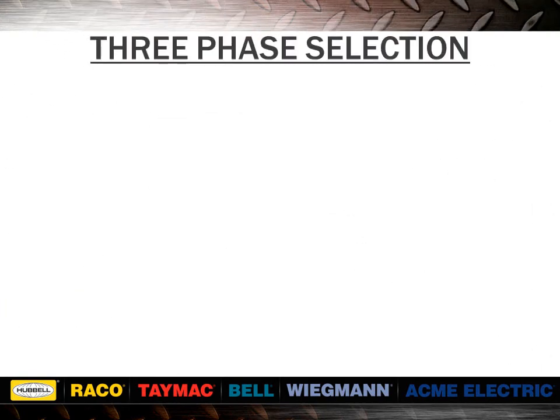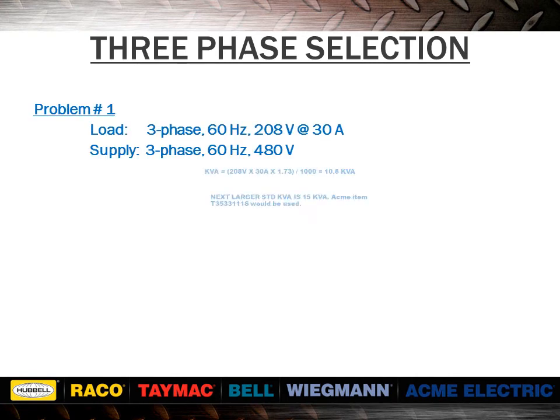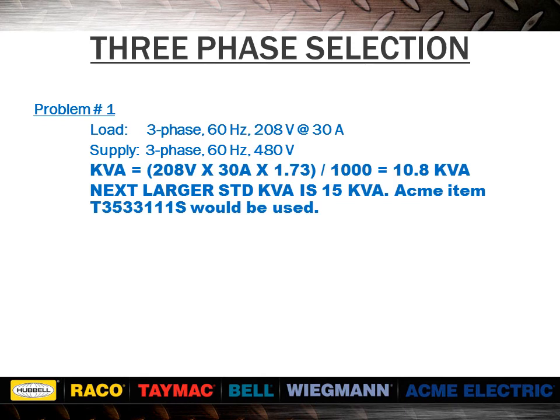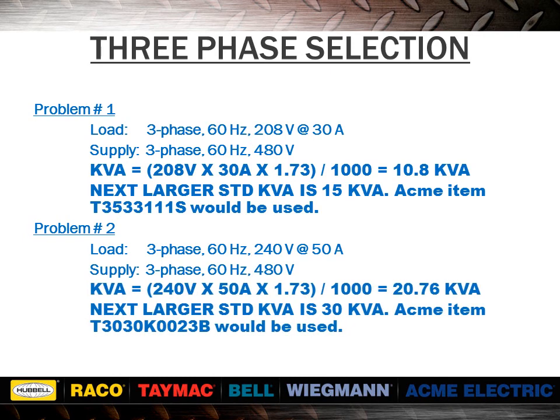Let's review two examples of three-phase selection. In problem one, the kVA requirement would be 208 volts multiplied by 30 amps multiplied by 1.73, then divided by 1,000, giving us a 10.8 kVA requirement. For this, our standard 15 kVA transformer, item number T3533111S, would be used. In problem two, the kVA requirement would be 240 volts multiplied by 50 amps multiplied by 1.73, then divided by 1,000, giving us a 20.76 kVA requirement. For this, our standard 30 kVA transformer, item number T3030K0023B, would be used.